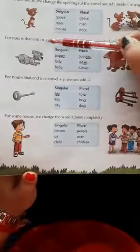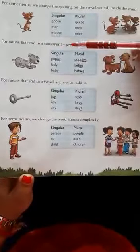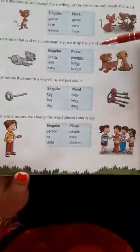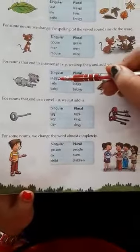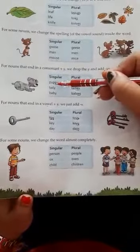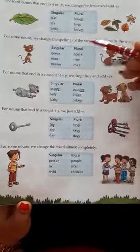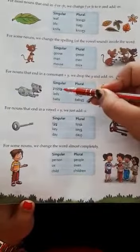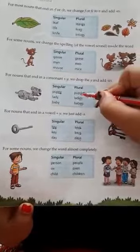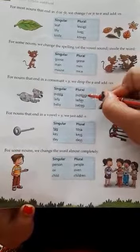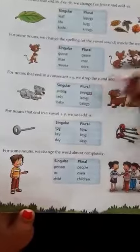For nouns that end in a consonant plus Y, we drop the Y and add IES. Here is a consonant P plus Y, so we have to drop this Y and add IES. Puppy — drop Y and add IES — becomes puppies.